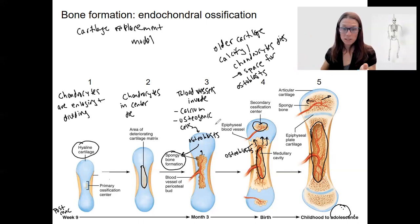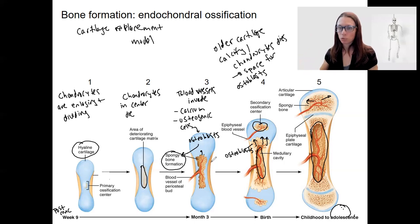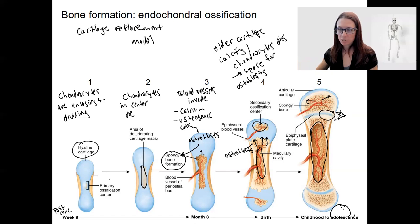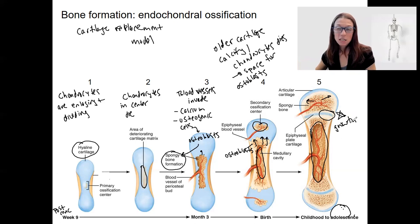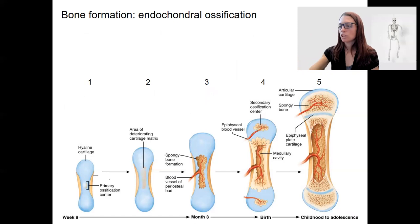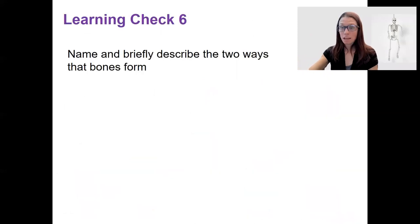That's what's happening with this whole model. We're going to zoom into it with bone growth, because that's really what's happening during this phase. Growth is going to occur as long as this cartilage epiphyseal plate is present. Growth will be covered in the next video. Learning check: describe and name the two ways that bones form.